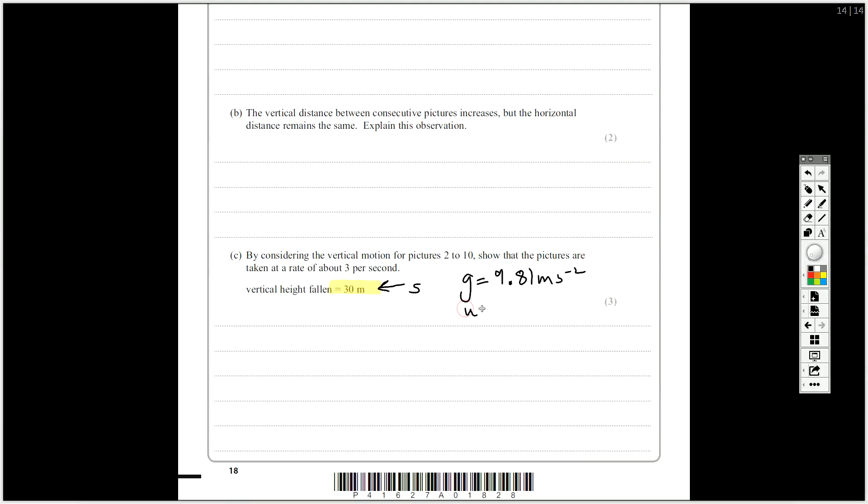You know as well that U, initial speed in the y dimension, is 0. So actually, now you can go to your equations of motion and you can find a suitable one. And your target is time. You've got to show the pictures are taken at a rate. So you've got to show the time, the total time first, and then you know you've got 8 pictures. So you just work it out like that. So the equation of motion that works is S equals UT plus a half AT squared, where you know that UT is 0, because U is 0. So S equals a half G, that's acceleration in this case, T squared.